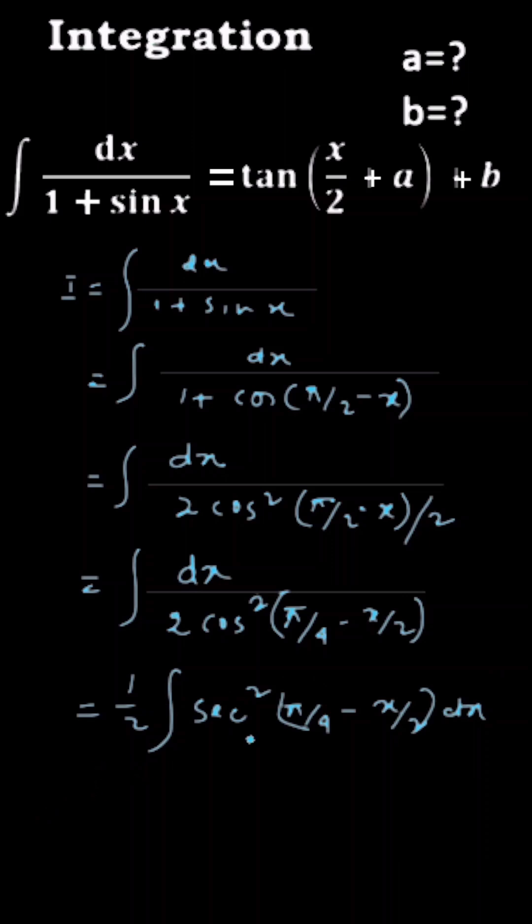You can apply the formula of integration here and it will be 1 by 2 into the integration of sec square x dx is equal to tan x, so it will be here tan pi by 4 minus x by 2, which will be divided by the derivative of this inner one, minus half.